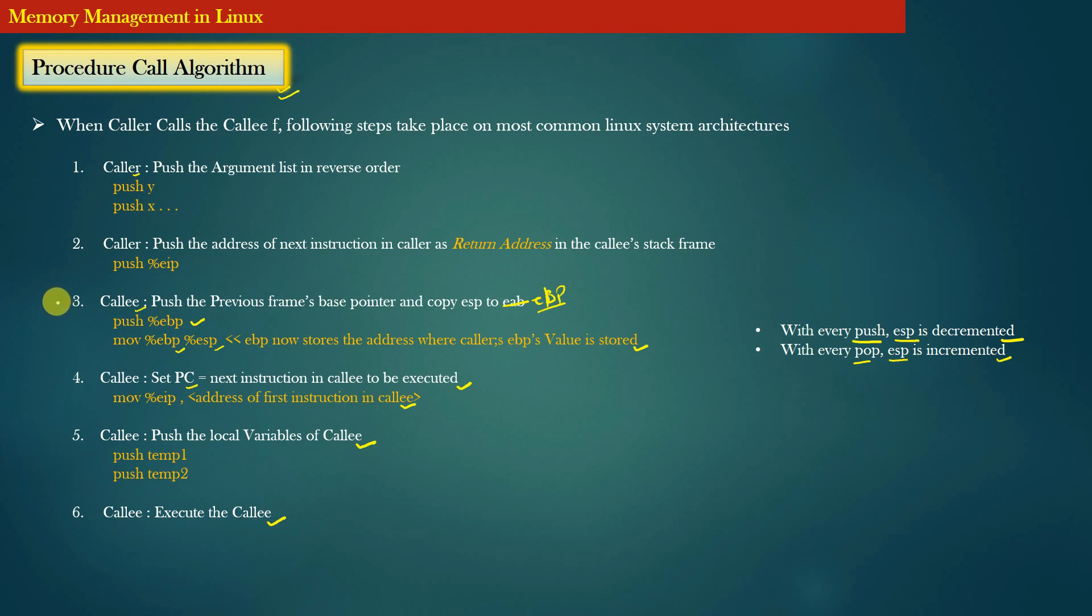Note that the code that I have written in this slide which is in yellow color is actually the assembly code. So I have written this assembly code here in order to tell you how actually the procedure call algorithm works at the assembly code level.